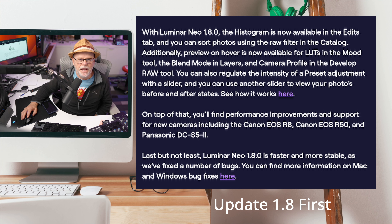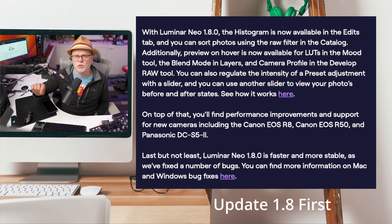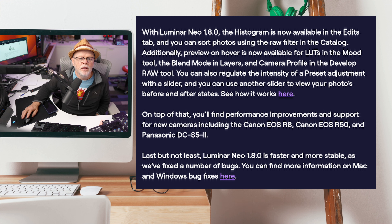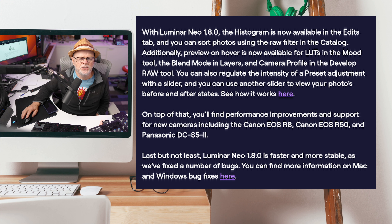Today I wanted to talk about an update that has come out. Some of the things they've added: you now get a histogram, which I'll show you in a second. There's also a nice preview now available in LUTs, and it will also show in the RAW tool, so if you're developing RAWs you can get this preview as well. You can regulate the intensity of preset adjustments, and they've added new camera support and bug fixes.